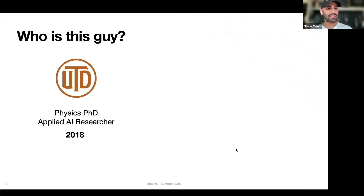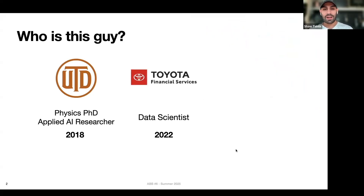I got into AI about six, seven years ago when I was getting my physics PhD. I was an applied AI researcher, just using AI to drive scientific discovery. After I graduated, I went and worked in industry at Toyota Financial Services, where I was doing the same kind of thing — but instead of applying AI to science, applying it to business.